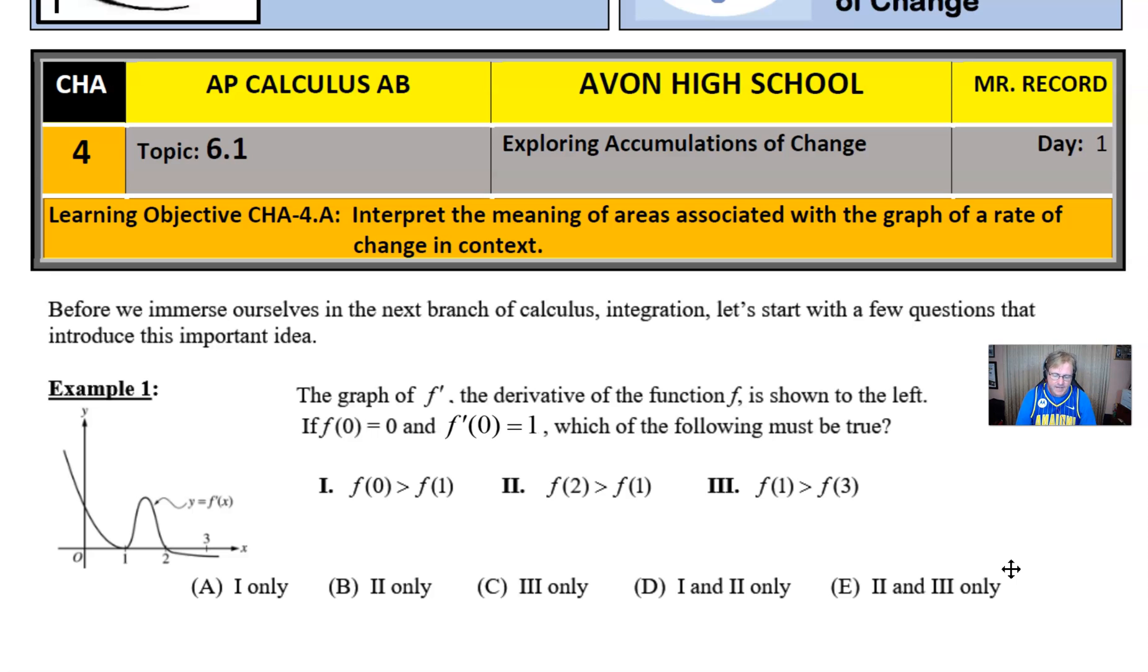Which of the following must be true? And as you can see, there are three statements. f of 0 is larger than f of 1. f of 2 is larger than f of 1. f of 1 is larger than f of 3. And we have various options here. There could be only one of these statements that's true. There could be a couple of them that are true. So the thing that you want to be able to do with this problem is,